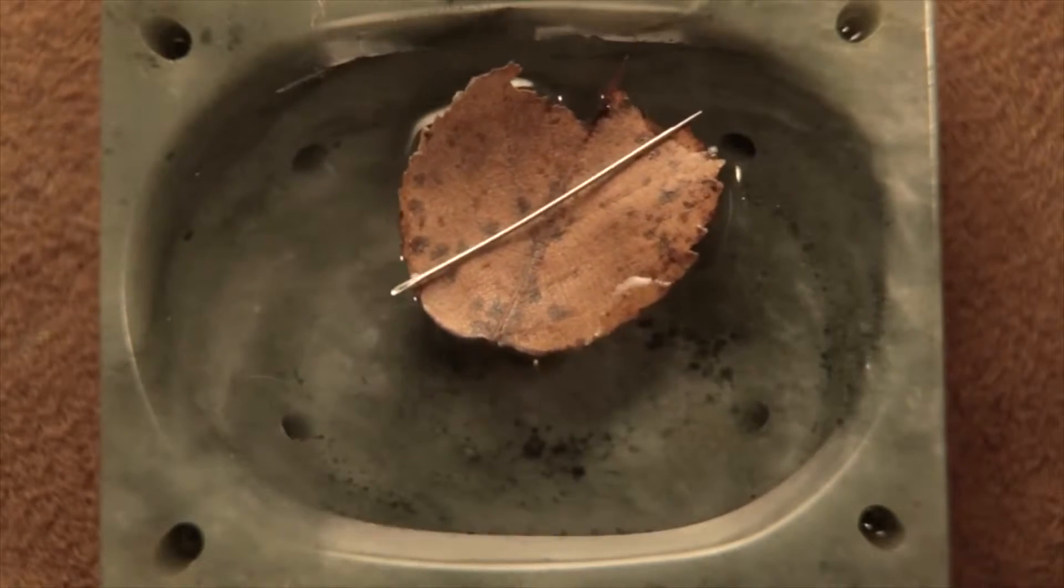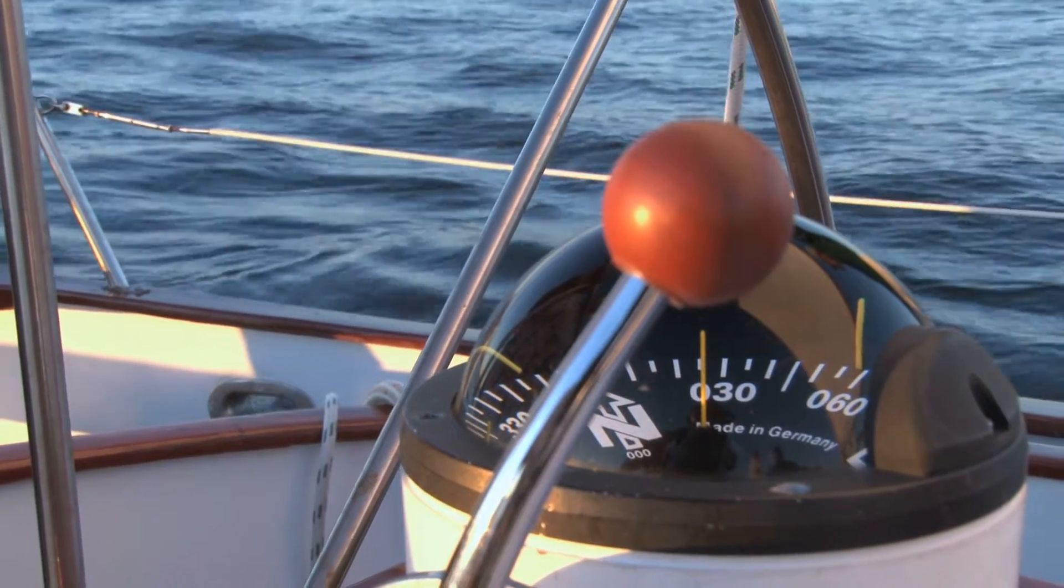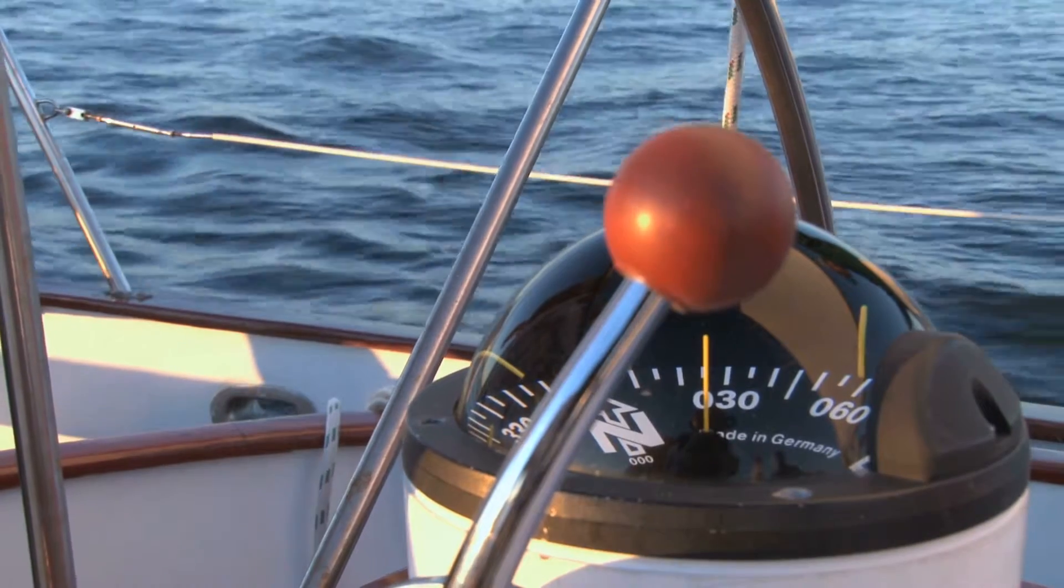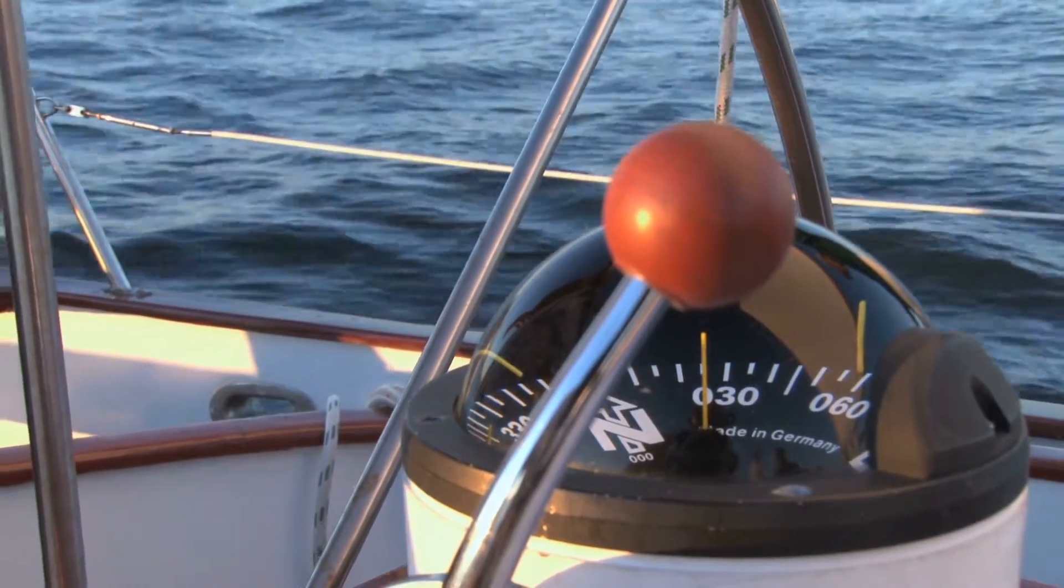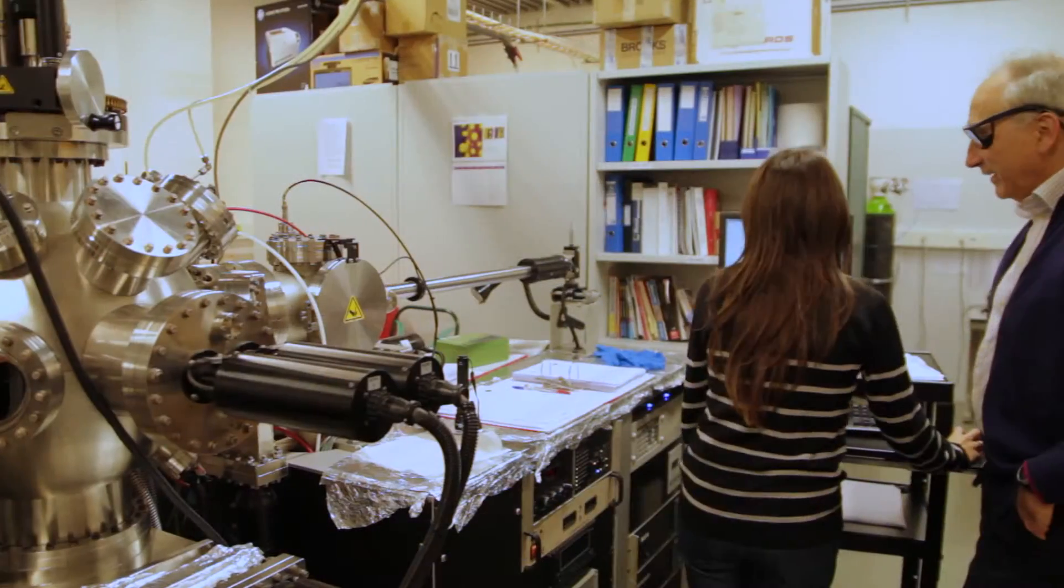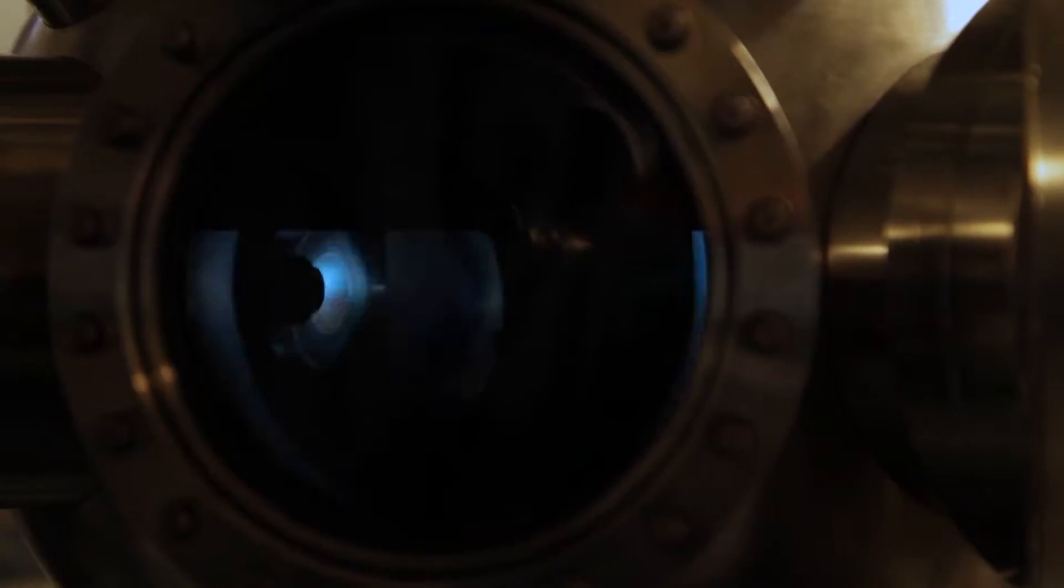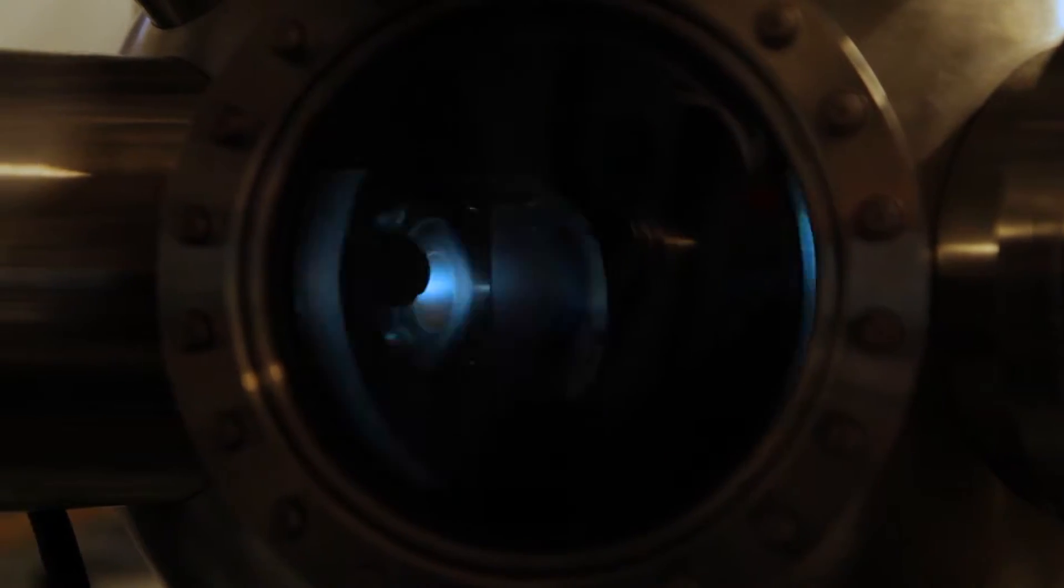Magnetism is a physical interaction known since antiquity. It was already used in compasses for navigation in China 3000 years BC. Magnetism and its applications have been present in all the scientific and technical revolutions of mankind and today they are also relevant in the field of nanotechnology.